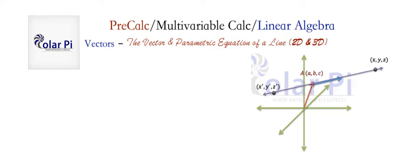Remember, a position vector is just a vector from the origin to a point. So this here is a position vector for the point A on our line. In order for us to write the vector or a parametric equation of a line, we need a point on our line. In addition to that point, we also need what's called a direction vector — this blue vector drawn on the line.